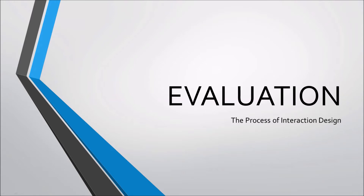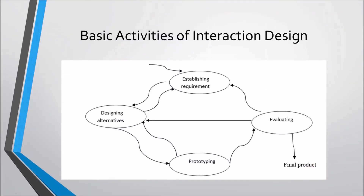Before we start, let us take a quick review on the different activities in the interaction design process. As you may recall in our previous lessons, in interaction design, particularly in the user-centered design approach, there is an early focus on the users and tasks. This means we must first identify the various kinds of users or stakeholders of the systems or software products that we are creating. Then, we can involve them in the design process or make an imaginary user with the use of personas. After identifying our users or stakeholders, we begin the four basic activities of interaction design.